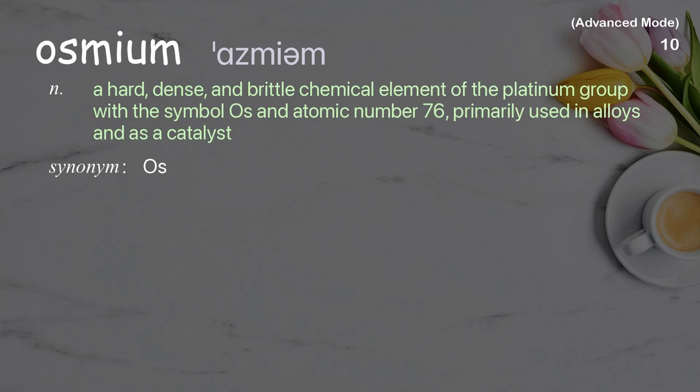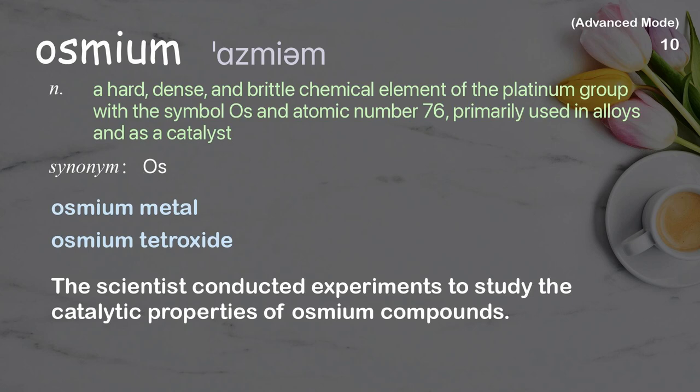Osmium: A hard, dense, and brittle chemical element of the platinum group with the symbol OS and atomic number 76, primarily used in alloys and as a catalyst. Examples: Osmium metal, osmium tetroxide. The scientist conducted experiments to study the catalytic properties of osmium compounds.